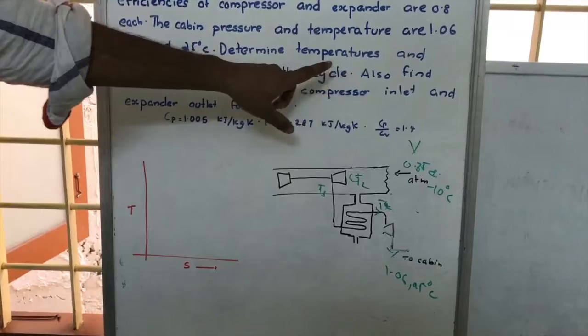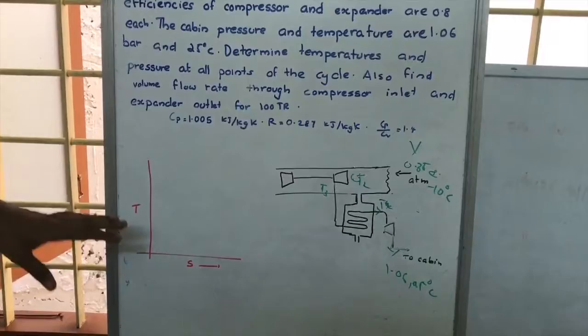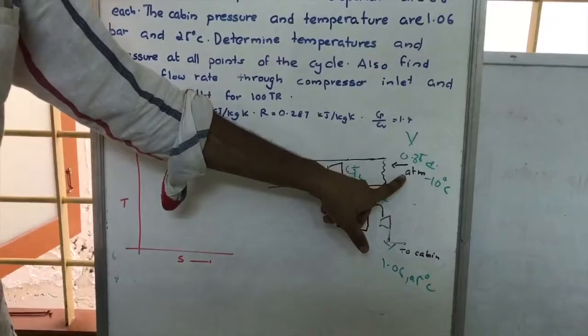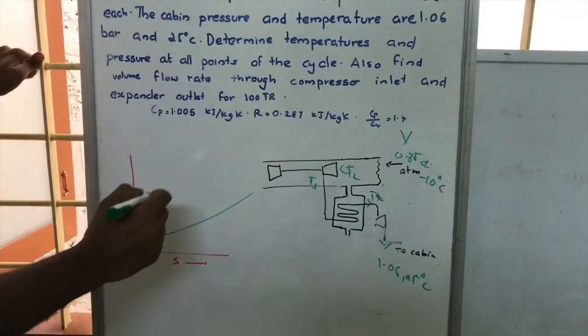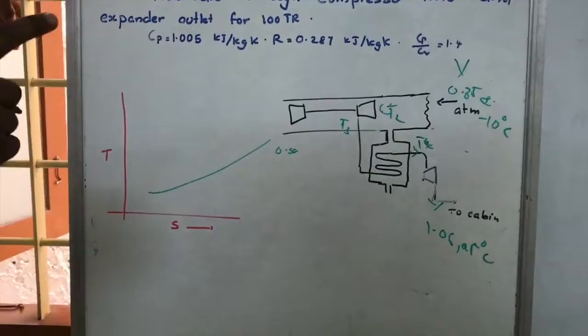We are asked to find the temperature and pressure at all points of the cycle. First, we will draw the T-S diagram. In the T-S diagram, the atmospheric pressure line for 0.35 bar is plotted.